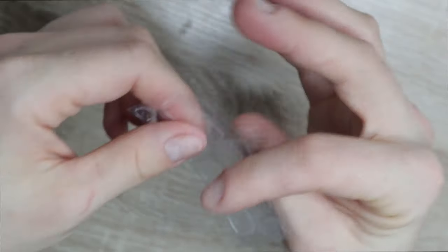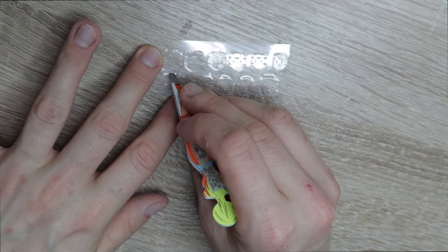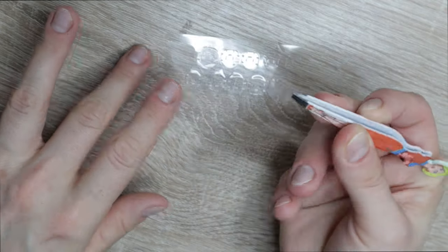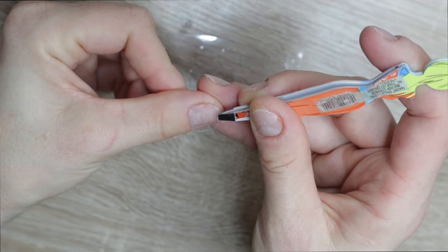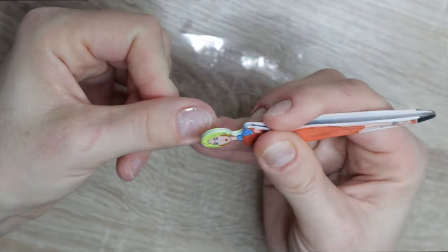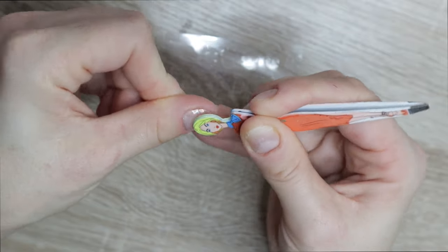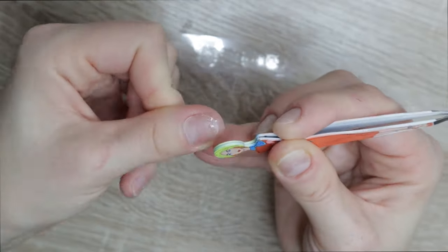I start with the largest and work my way to the smallest, so I'm doing my thumbnail here. This is just like my other press-on nail video except there will be an extra step here including nail glue. I'm just using the other end of my tweezers to push everything flat.